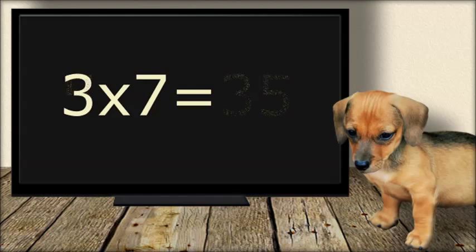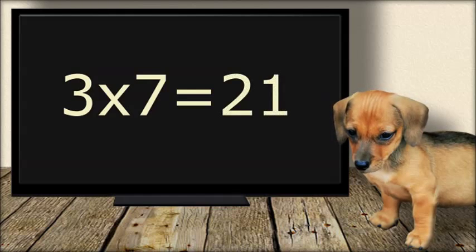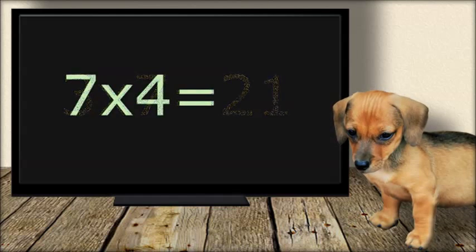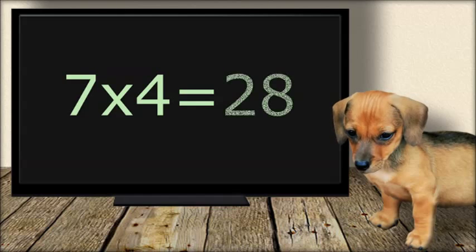3 times 7 equals... 21. 7 times 4 equals... 28.